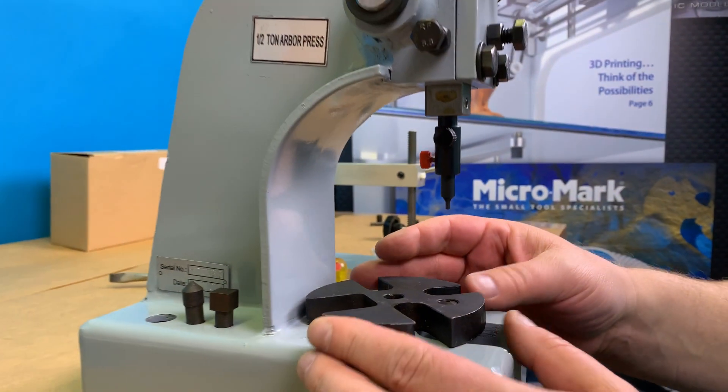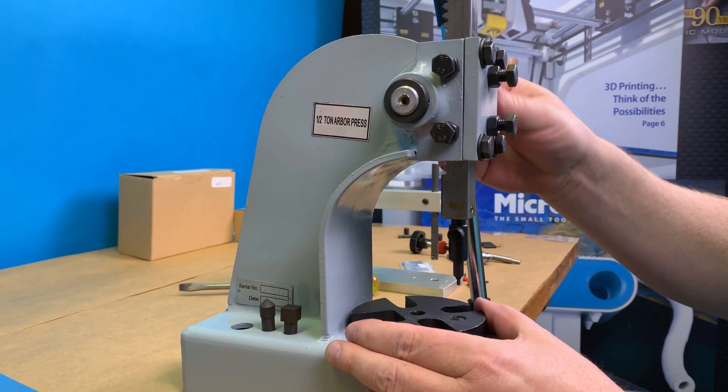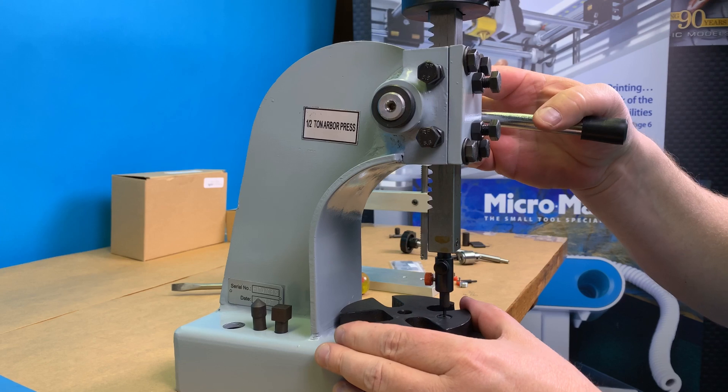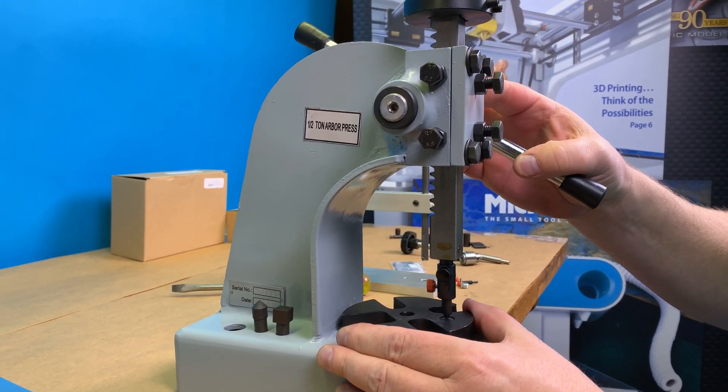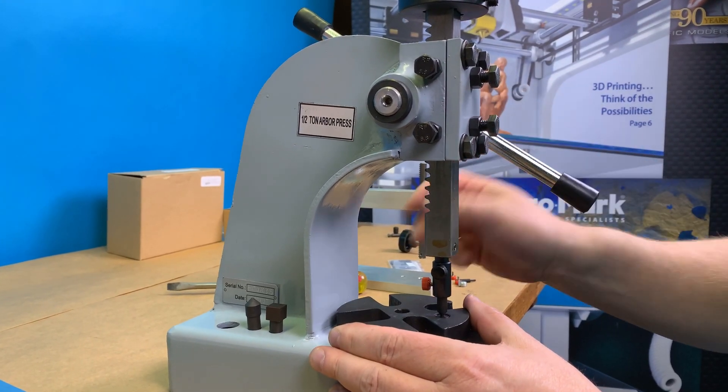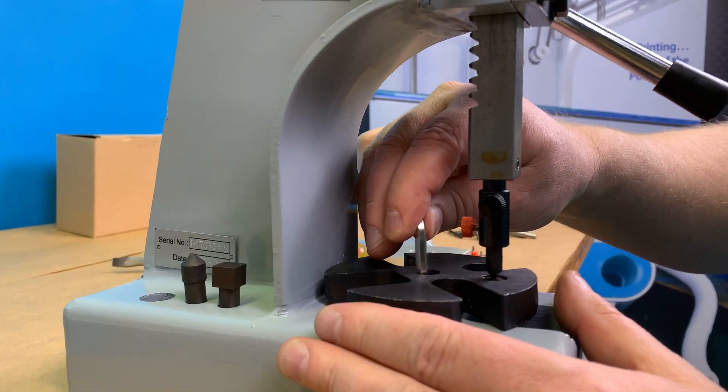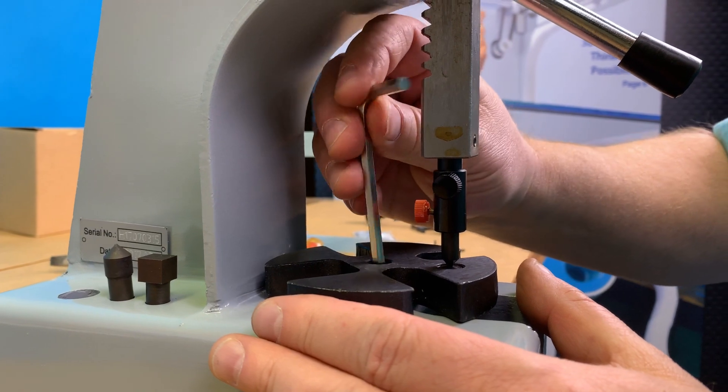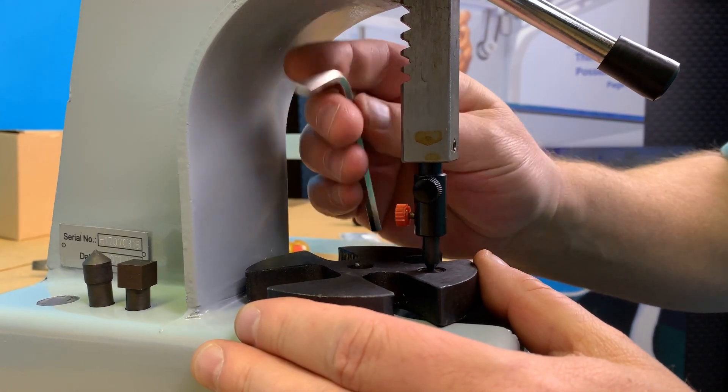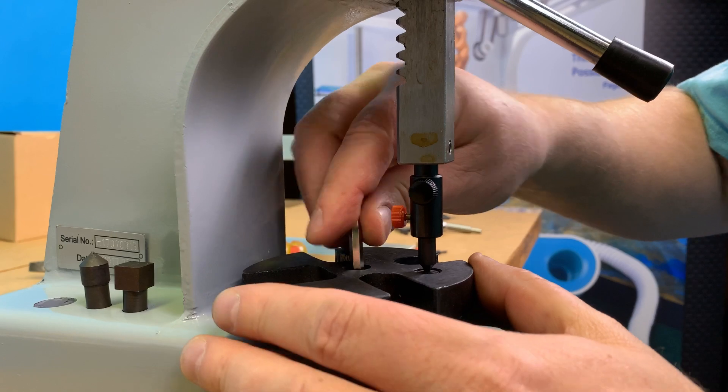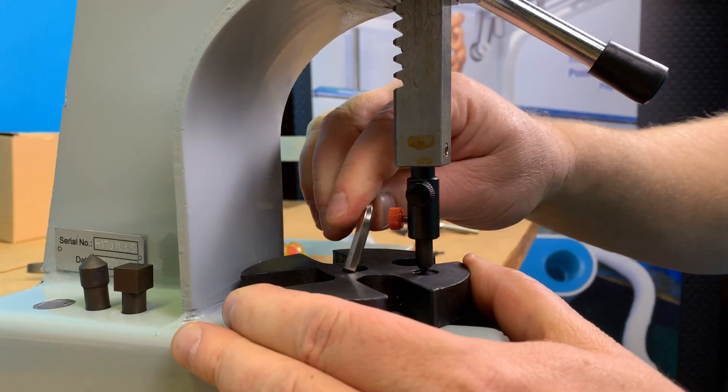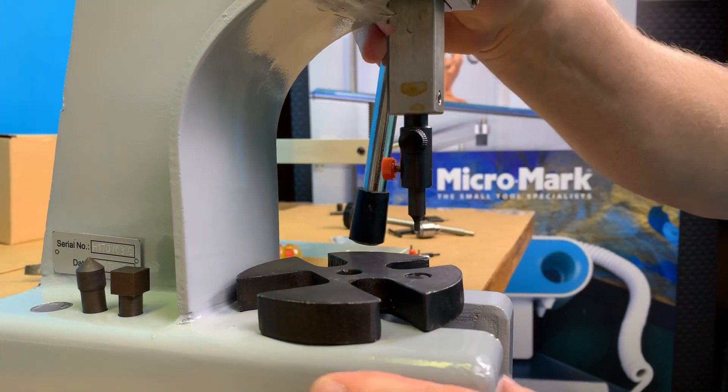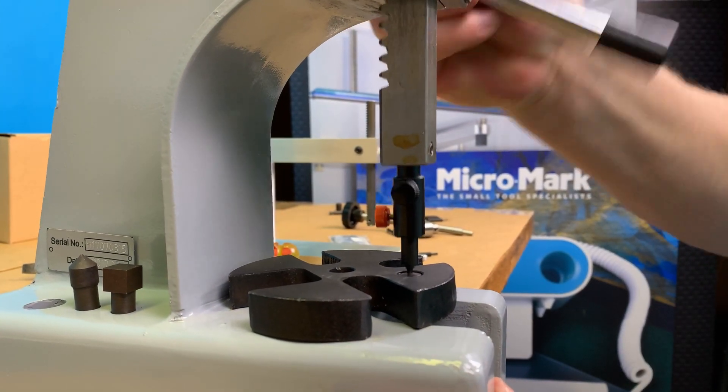Now, the versatility of the table. You wouldn't be able to do this with any other arbor press table on the market. I'm going to line up my punch with my die. And now I'm going to take my big allen wrench here and with the center screw, I'm going to lock the table in place because I want to be doing repeated operations here, punching out material. And now it enters it every time.